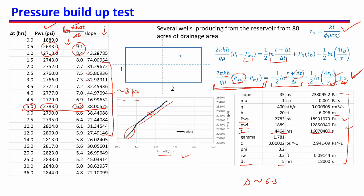In the next video we will see how to find p-bar, the average reservoir pressure. We know p-bar can be found from p-star, which is obtained by extending the straight line to ln((t + ΔT) / ΔT) = 0. However, finding p-bar just from that equation is not simple for real reservoirs, so I will introduce another concept in the next video. Thank you everyone.